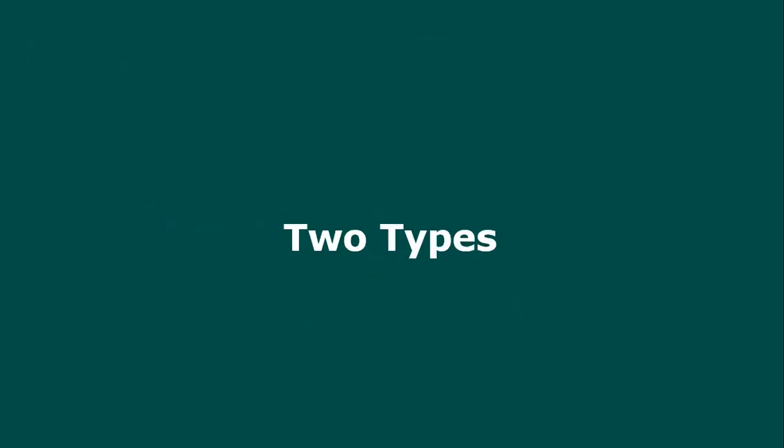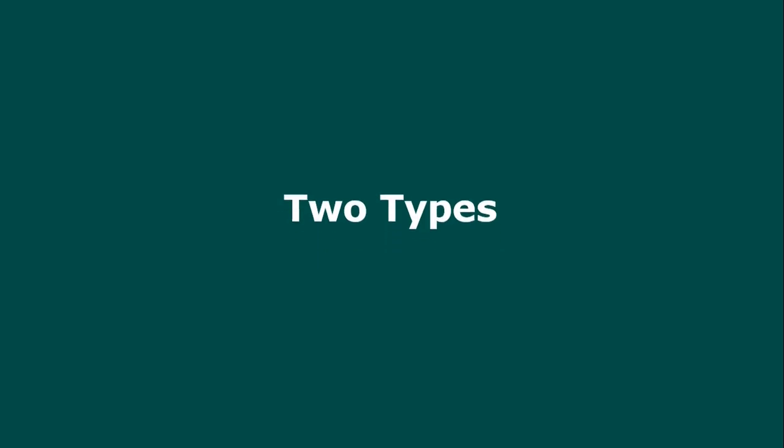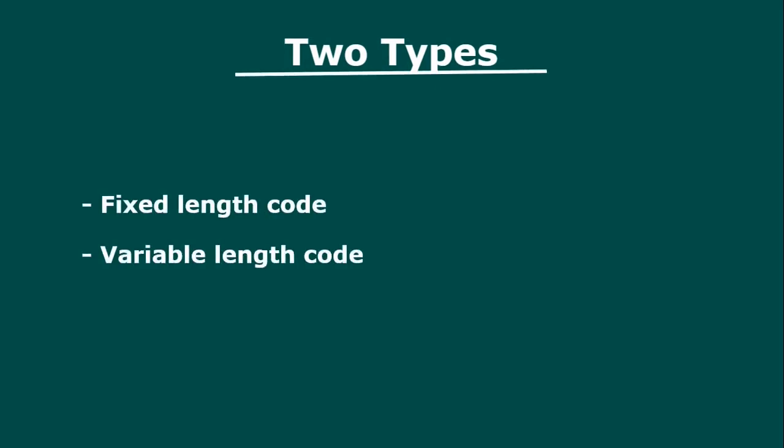Now let's see how many types there are. There are two kinds of Huffman encoding systems. The first one is fixed-length code, where we use a fixed number of bits to compress our data. This video will cover fixed-length code, and the next video will cover variable-length code.